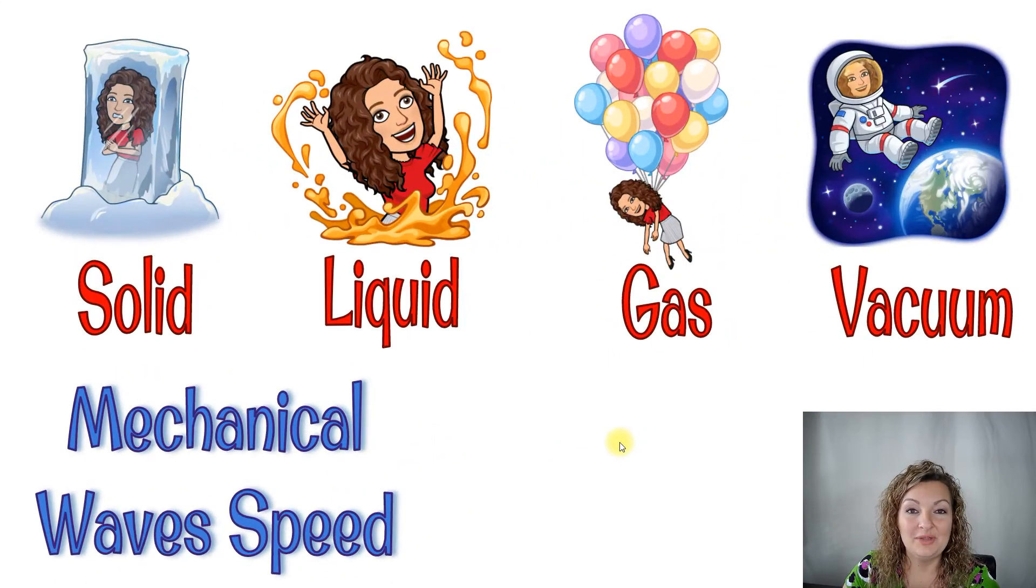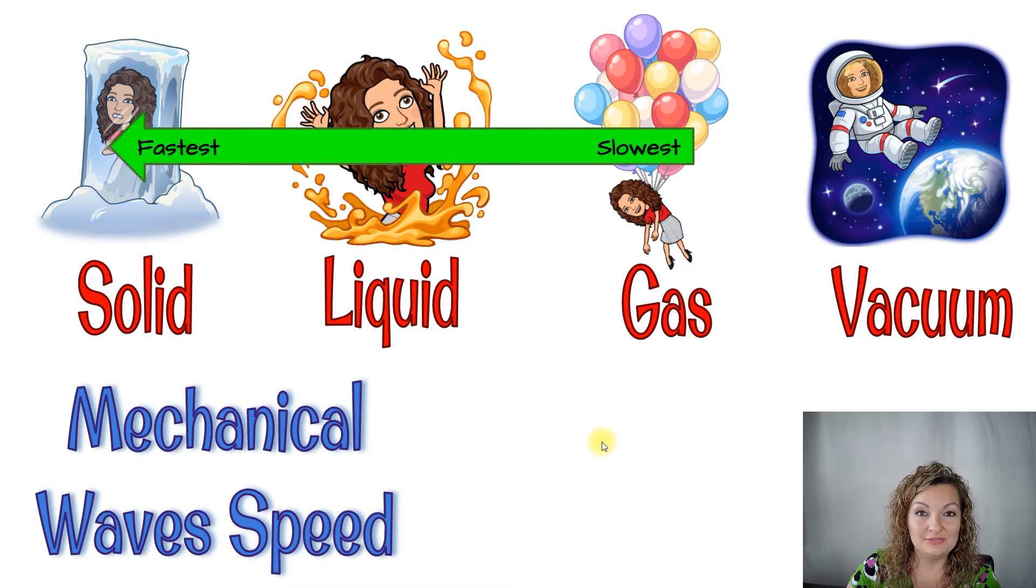So you might be wondering where this one goes the fastest, the slowest. This one is pretty much the opposite of an electromagnetic wave. We know that it can't go through a vacuum. And in this one, the more densely packed the particles are, the faster it can travel. So it's going to go the very slowest in gas where our particles are farther apart.